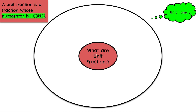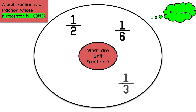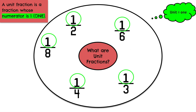Let's read some examples of unit fractions: 1 half, 1 sixth, 1 third, 1 fourth, 1 eighth. We notice that all of the numerators are 1 because unit generally means 1. So this unit fraction is asking for just 1 of the parts.